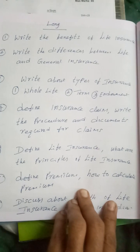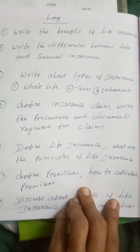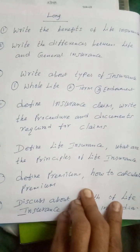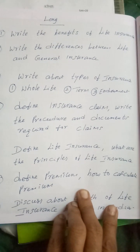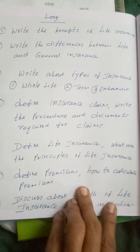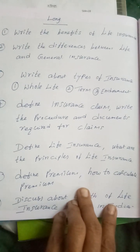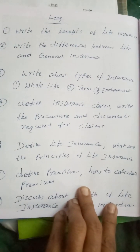Write about three kinds of policies. The available types are: first, whole life policies; second, term insurance and endowment policies; and third, participating policies and mutual funds.